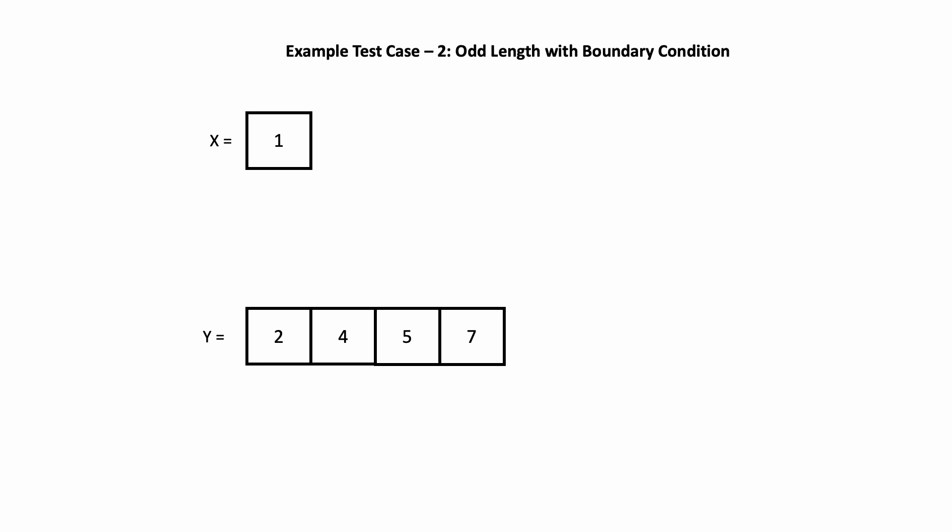Let's visualize the solution where the sum of the lengths of the arrays is odd and the partition hits the boundaries of the array. Let's say x = [1] and y = [2, 4, 5, 7]. The median is 4, because when you merge and sort arrays x and y, the middle element is the median, which is 4.